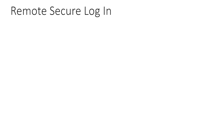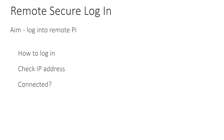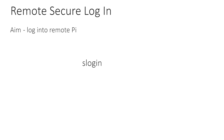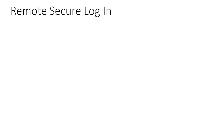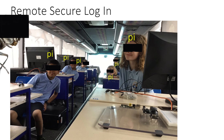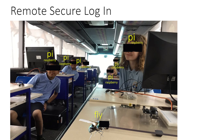We now only need one more command to log into another machine and shut it down. We know how to check our IP address and whether we're connected — now we need to log in remotely. The command is 'slogin', short for secure login. You use it with a username and address like an email: 'slogin pi@192.168.x.x'. On the coach you knew all users were 'pi', passwords were 'raspberry', and the IP addresses were on the whiteboard, so logging in was straightforward.